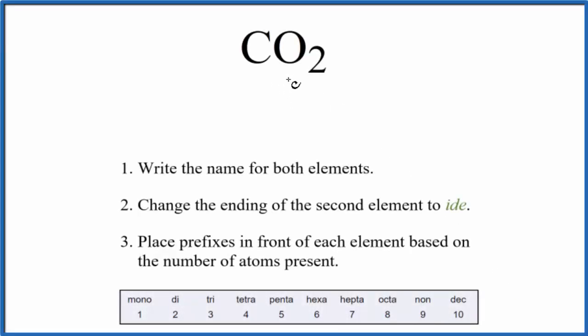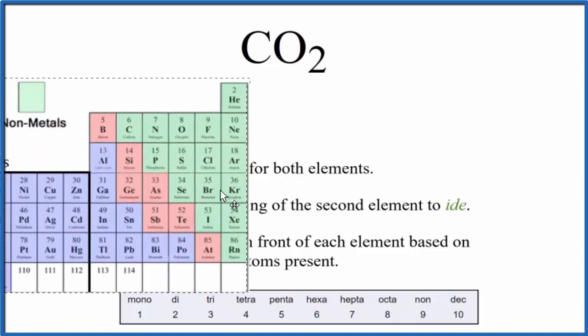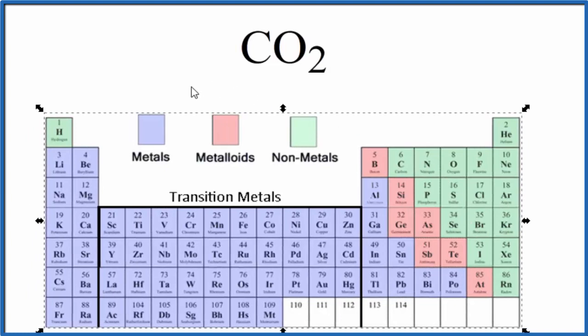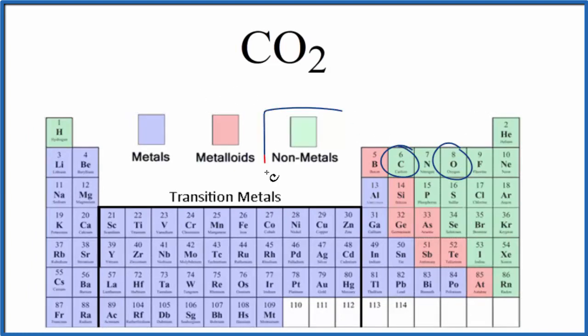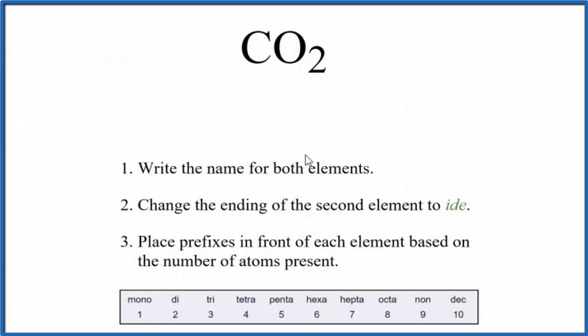To write the name for CO2, we first have to figure out what type of compound we have. We look on the periodic table and see that carbon and oxygen are both non-metals. When we have two non-metals, we have a molecular or covalent compound, and we can use these rules to write the name.